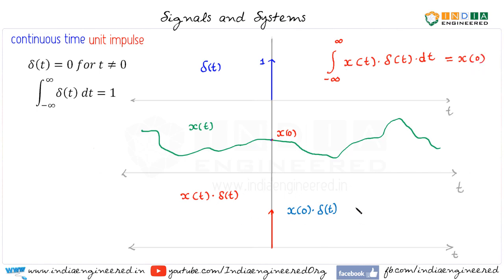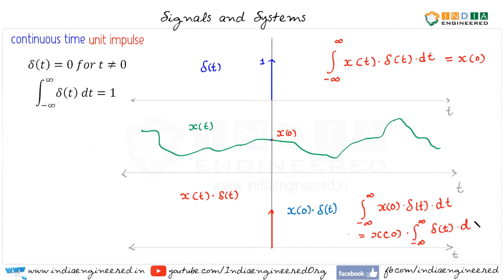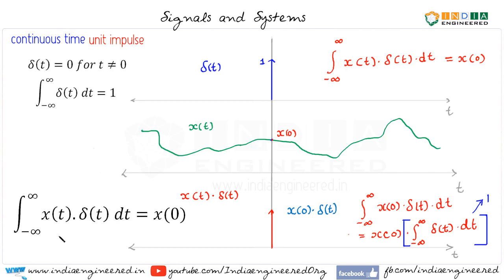On integrating this, we may substitute: the integral from minus infinity to infinity of x(0)·δ(t) dt. Since x(0) is a constant, we can take it outside: x(0) times the integral from minus infinity to infinity of δ(t) dt. That part equals 1, so we get x(0). This is an important result: the integral from minus infinity to infinity of x(t)·δ(t) dt equals x(0).